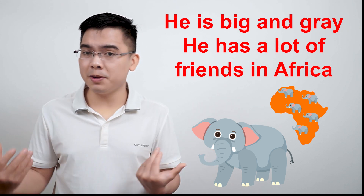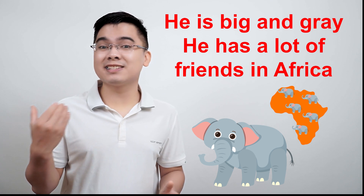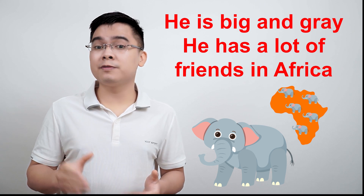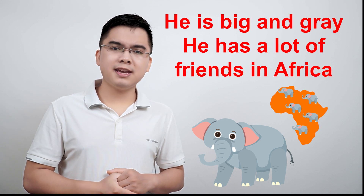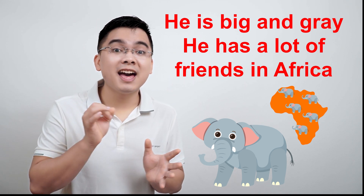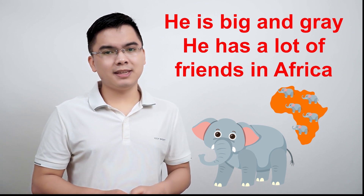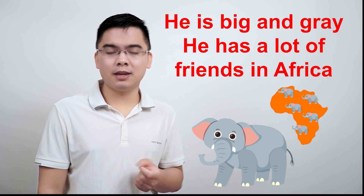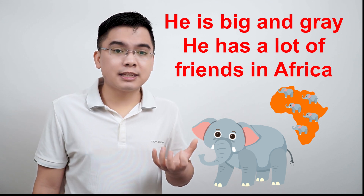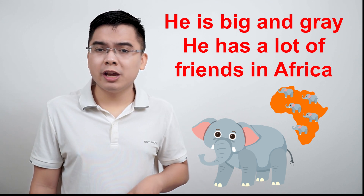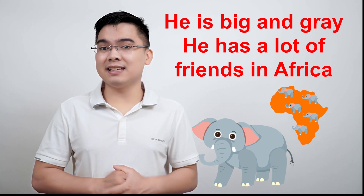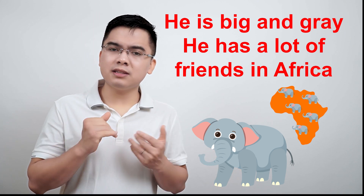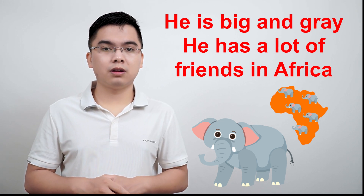Is Andy big and gray? Yes, Andy is big and gray. So what color is Andy? Gray! Andy is gray. What kind of animal is Andy? It is an elephant. Andy is an elephant. Is Andy a snake? No. Is Andy an ant? No. Is Andy a roach? No. Andy is an elephant.